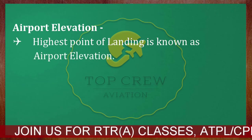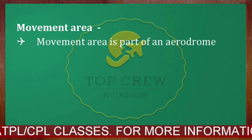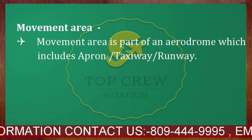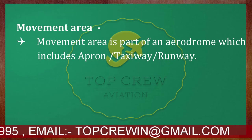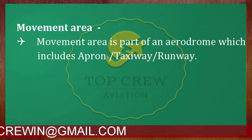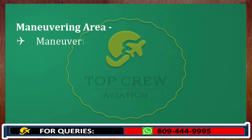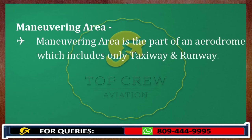There are some other terms. What is movement area? It is a part of an aerodrome which includes apron, taxiway and runway. Where the aircraft moves is known as the movement area. What is manoeuvring area? Manoeuvring area is the part of an aerodrome which includes only taxiway and runway. Make sure we do not include apron in manoeuvring area, because aircraft manoeuvres on taxiway and runway only.